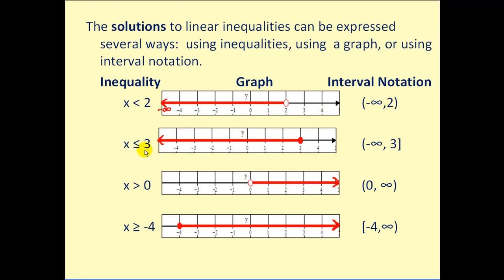If you take a look at the second inequality, x is less than or equal to 3, the less than or equal symbol translates into a closed point because now 3 is included in that solution. If you look at the interval notation to show that 3 is included, we use a square bracket.